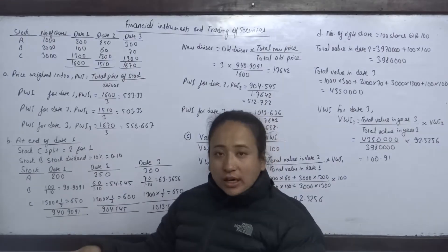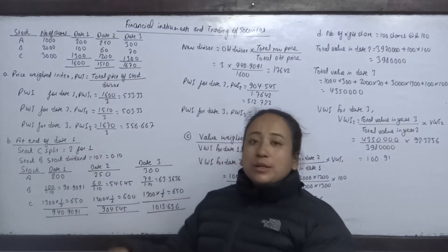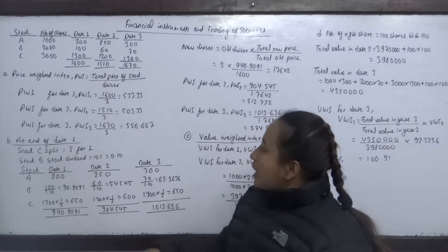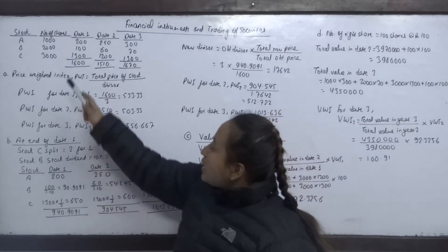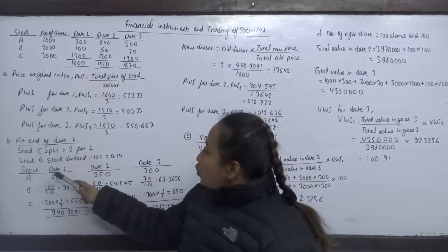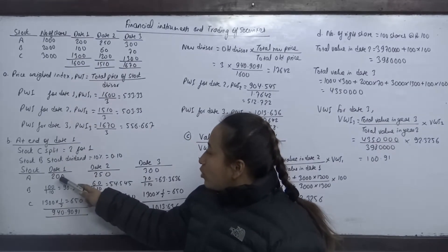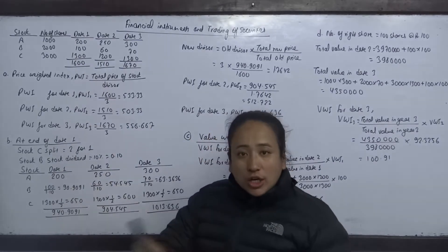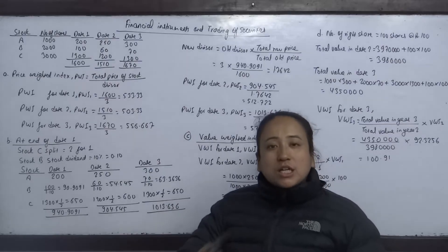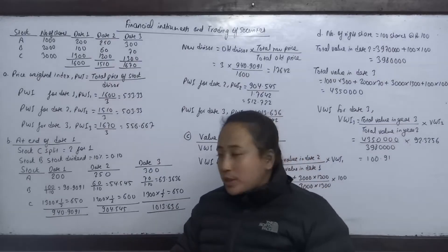We need split-adjusted and stock-dividend-adjusted prices. After a stock split or stock dividend, the prices of the affected stocks must be adjusted before recalculating the index.